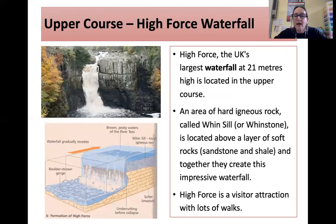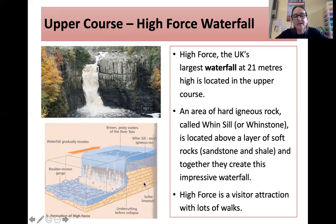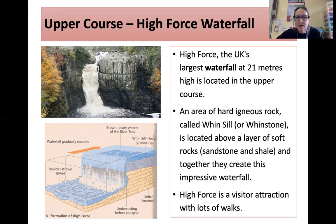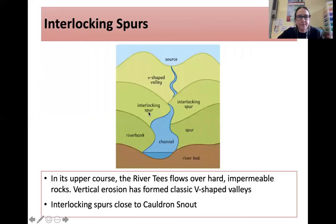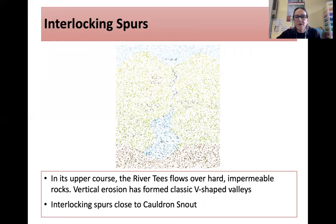Again in the upper course, we have waterfalls. High Force is the largest waterfall in England at 21 metres high. The diagram shows how it has formed with specific reference to High Force. Whinstone is that tough, igneous, hard rock sitting on top of softer limestone. An area of hard igneous rock called whinstone is located above a layer of soft rock — sandstone and shale — and together they create this impressive waterfall. It's a visitor attraction with lots of walks, and you can see the whinstone sticking out as that hard rock. The River Tees flows over hard impermeable rocks, and vertical erosion has formed classic V-shaped valleys with interlocking spurs, close to Cauldron's Snout.